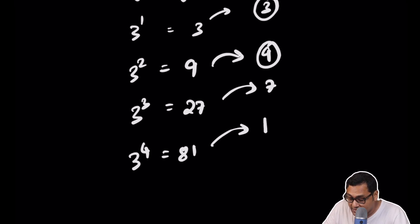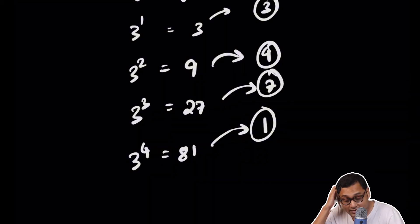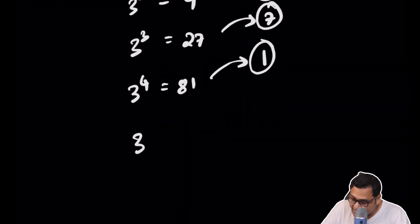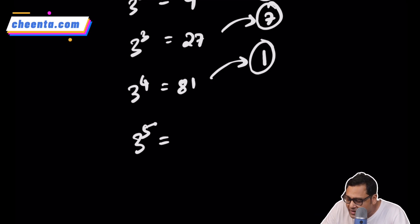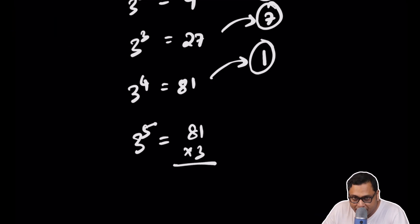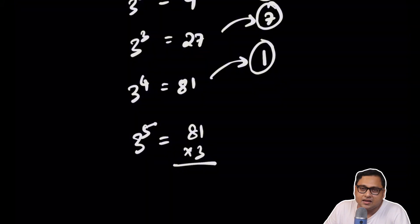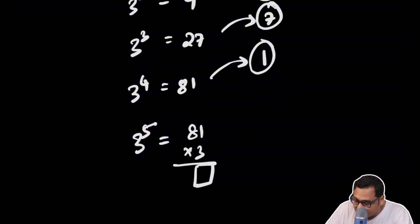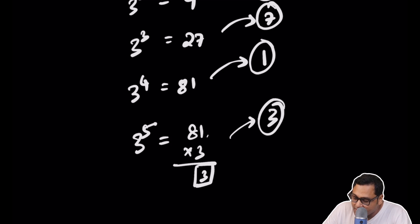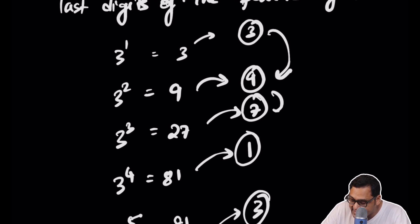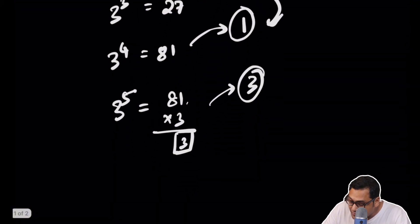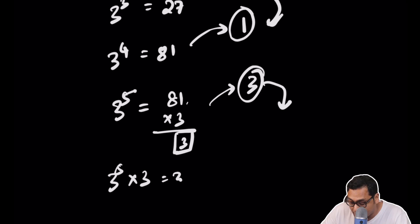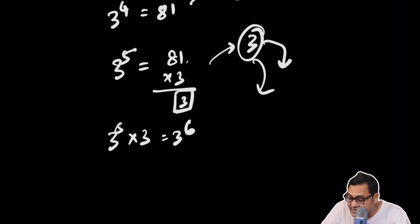So the last digits go: 3, 9, 7, 1. If we do three to the power five — multiply 81 by 3 to get 243 — we are only interested in the last digit, which is 3 times 1 = 3. So the pattern repeats: 3, 9, 7, 1, and then again 3. Three to the power six gives last digit 9 again. So it continues cycling: 3, 9, 7, 1 — repeating every four powers.